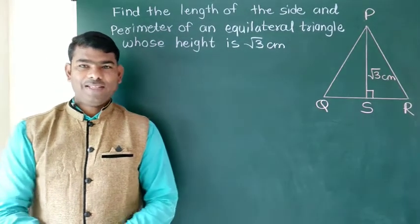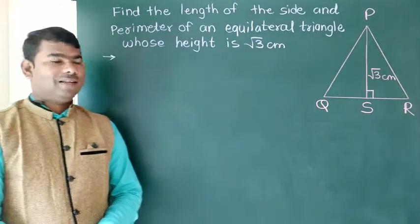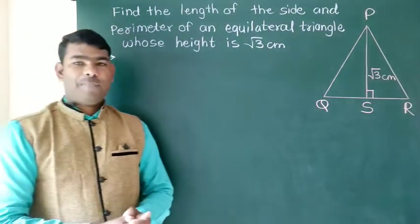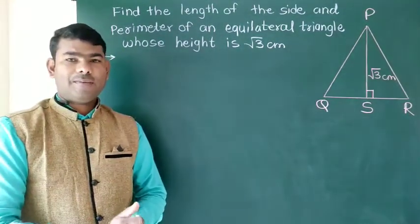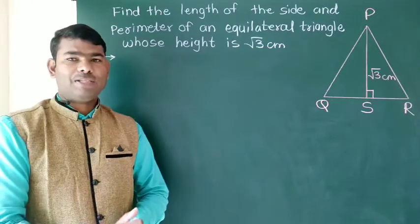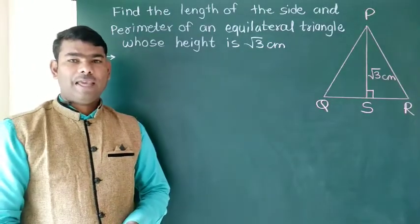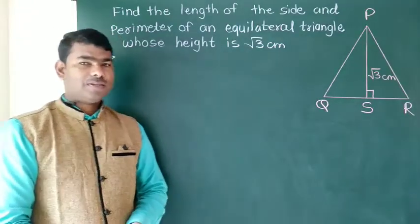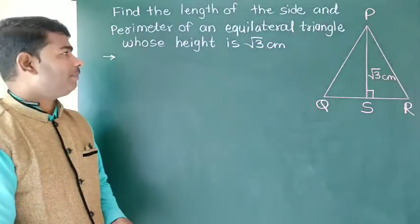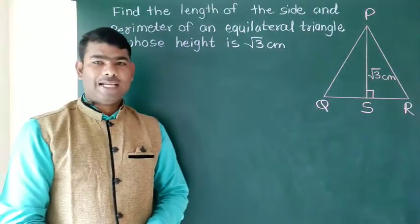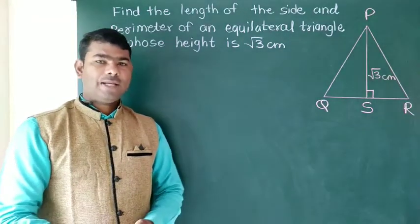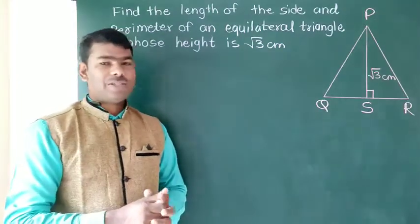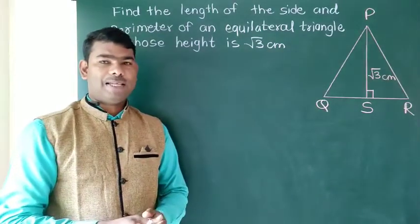Hello friends! Today we are going to practice examples on Pythagoras theorem. We will solve examples on 30-60-90 triangle and equilateral triangle properties.